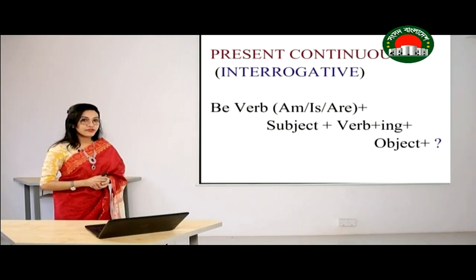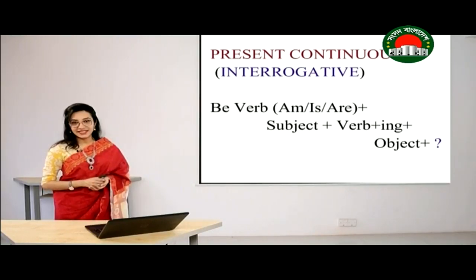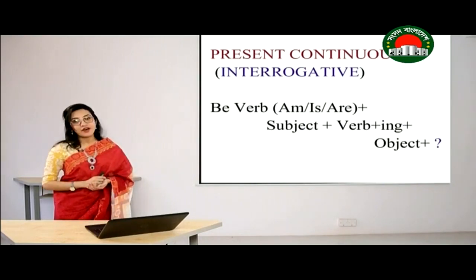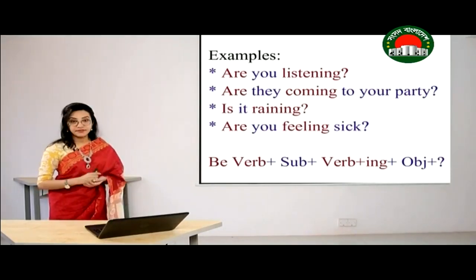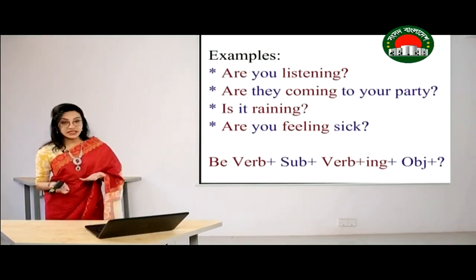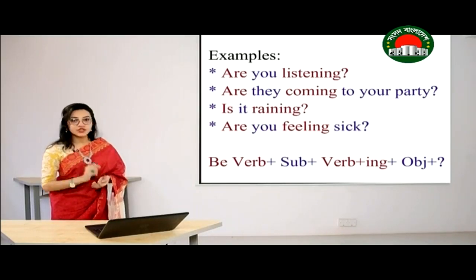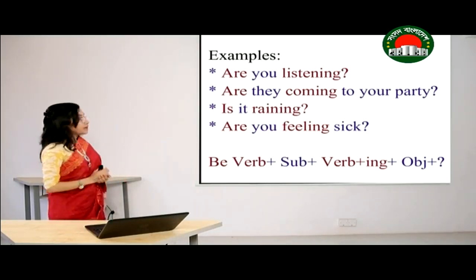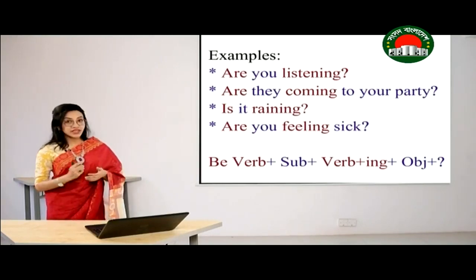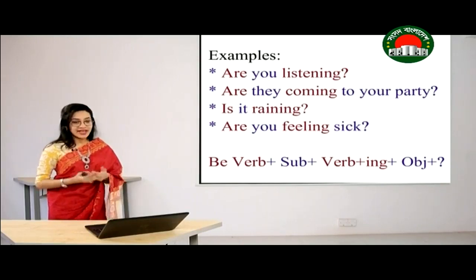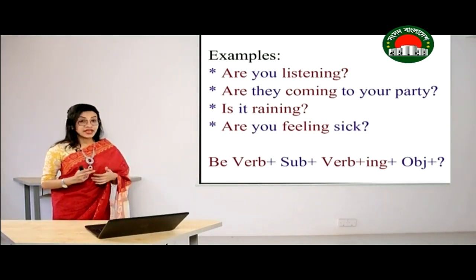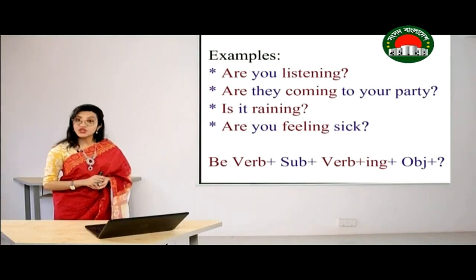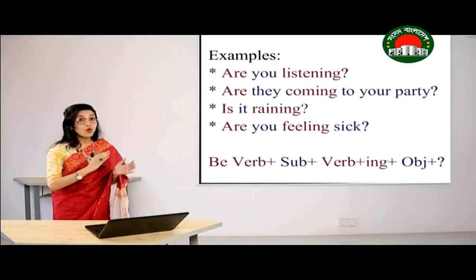Moving on to the structure of interrogative sentences using present continuous tense. In an interrogative sentence, we use the be verb at the beginning: Be verb + subject + verb + ing + object + question mark. For example: 'Are you listening?' 'Are they coming to your party?' 'Is it raining?' 'Are you feeling sick?' The most important thing: whenever you are using an interrogative sentence, do not forget to add a question mark, because without it, the whole sentence becomes meaningless.